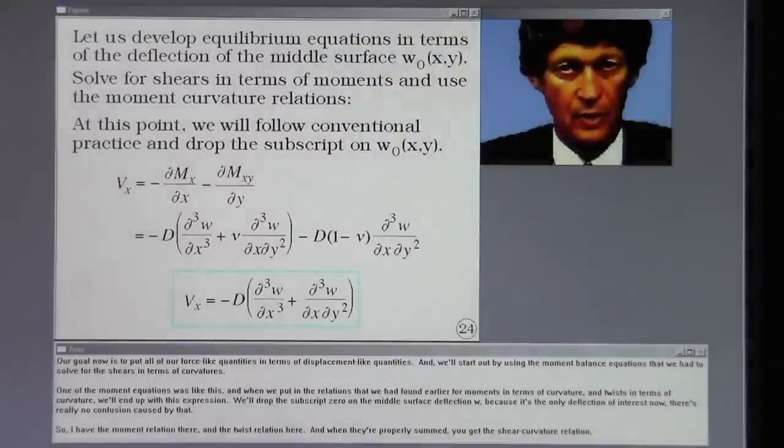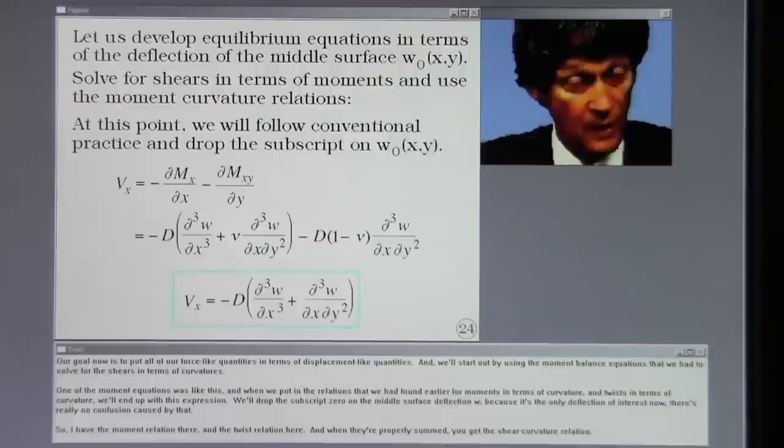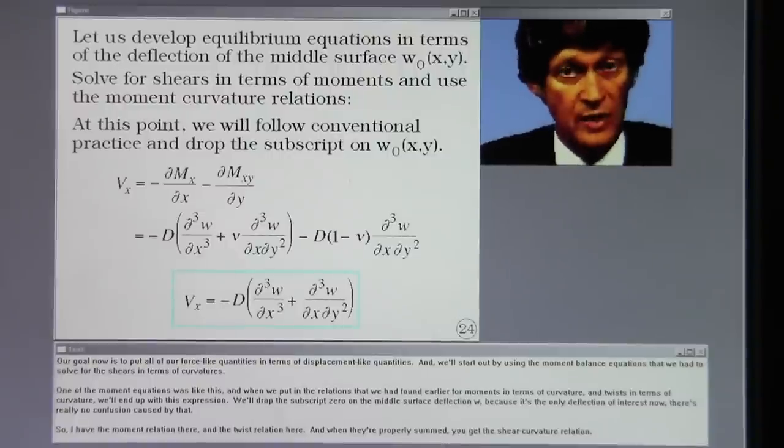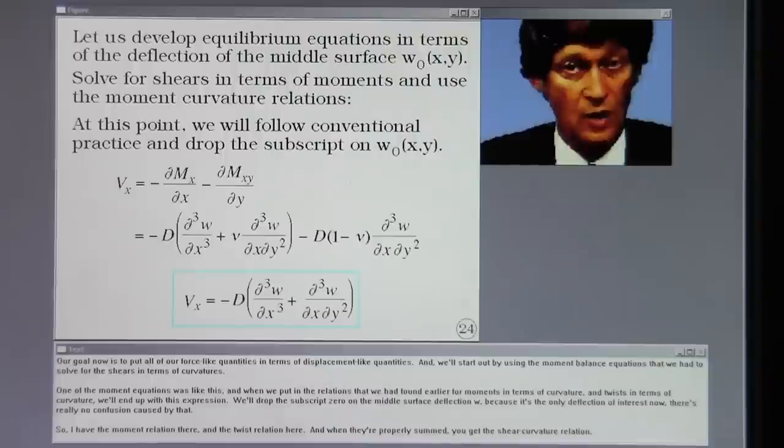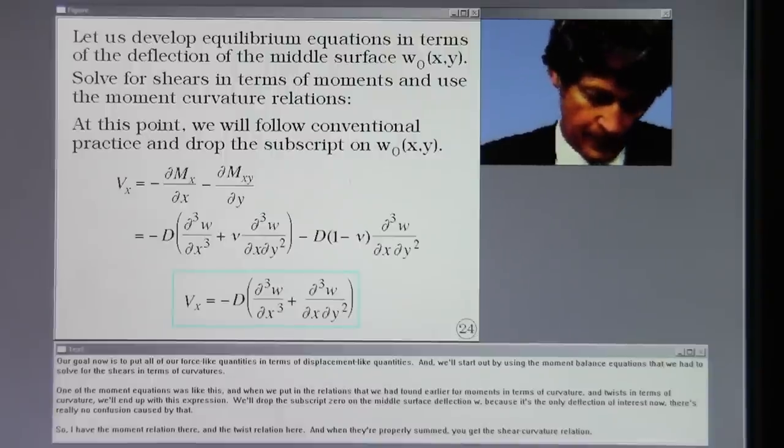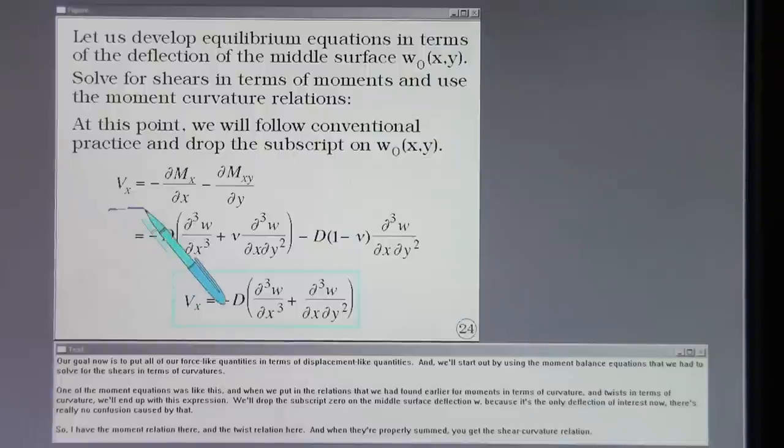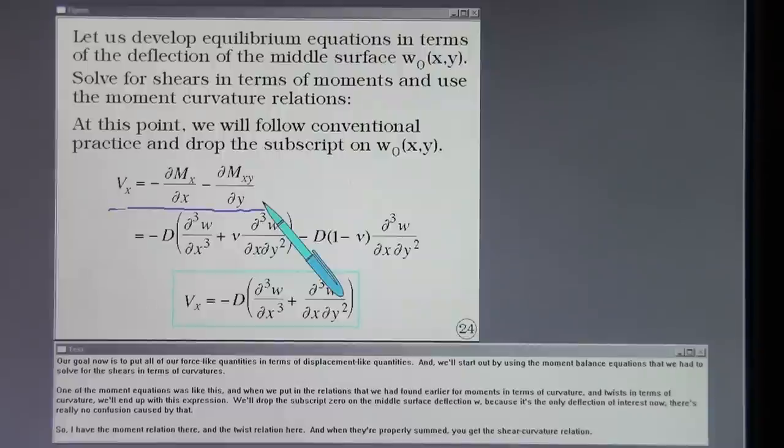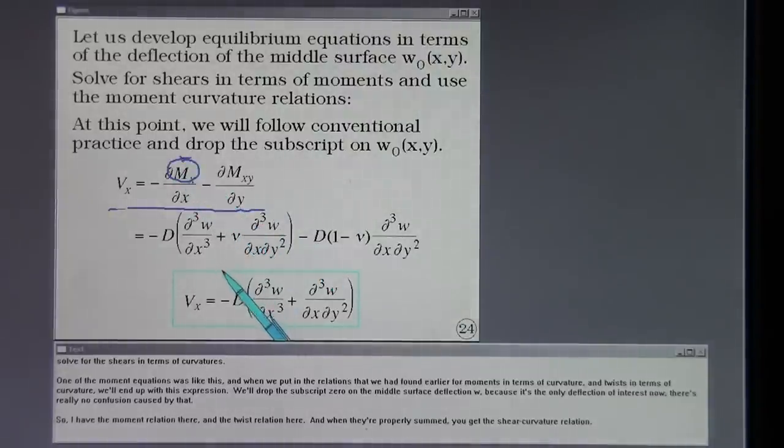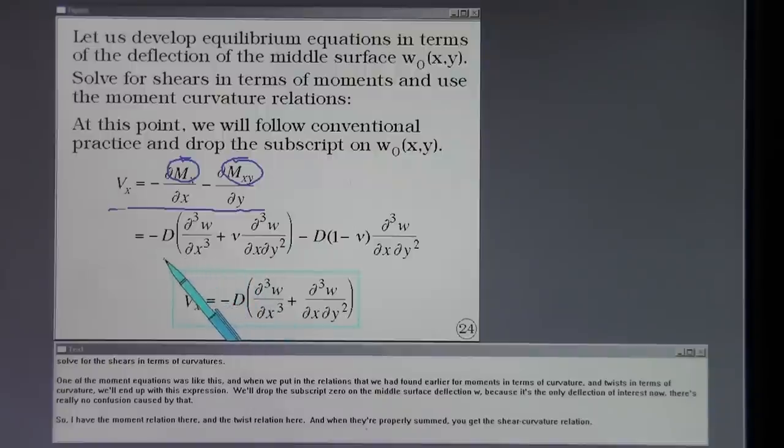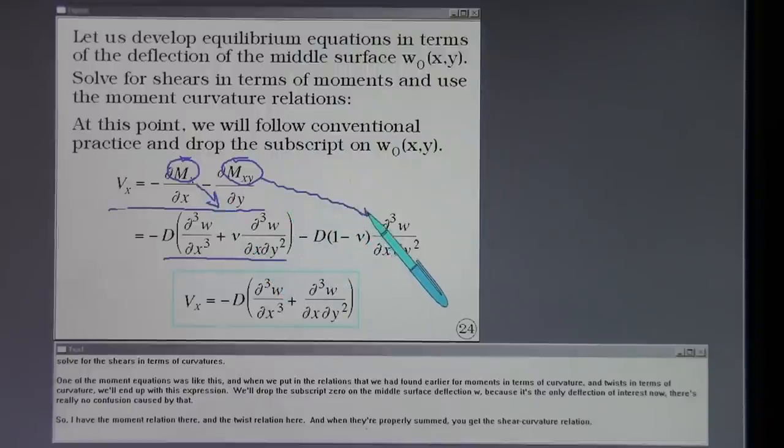Our goal now is to put all of our force-like quantities in terms of displacement-like quantities. And we'll start out by using the moment balance equations that we had to solve for the shears in terms of curvatures. One of the moment equations was like this. And when we put in the relations that we had found earlier for moments in terms of curvature and twist in terms of curvature, we'll end up with this expression. We'll drop the subscript zero on the middle surface deflection W. Because it's the only deflection of interest now. There's really no confusion caused by that. So I have the moment relation there and the twist relation here. And when they're properly summed, you get the shear curvature relation.